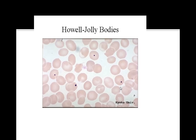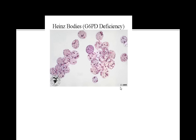Howell-Jolly bodies are nuclear fragments seen in splenectomy and sickle cell patients. Heinz bodies are common with G6PD deficiency and represent denatured hemoglobin.